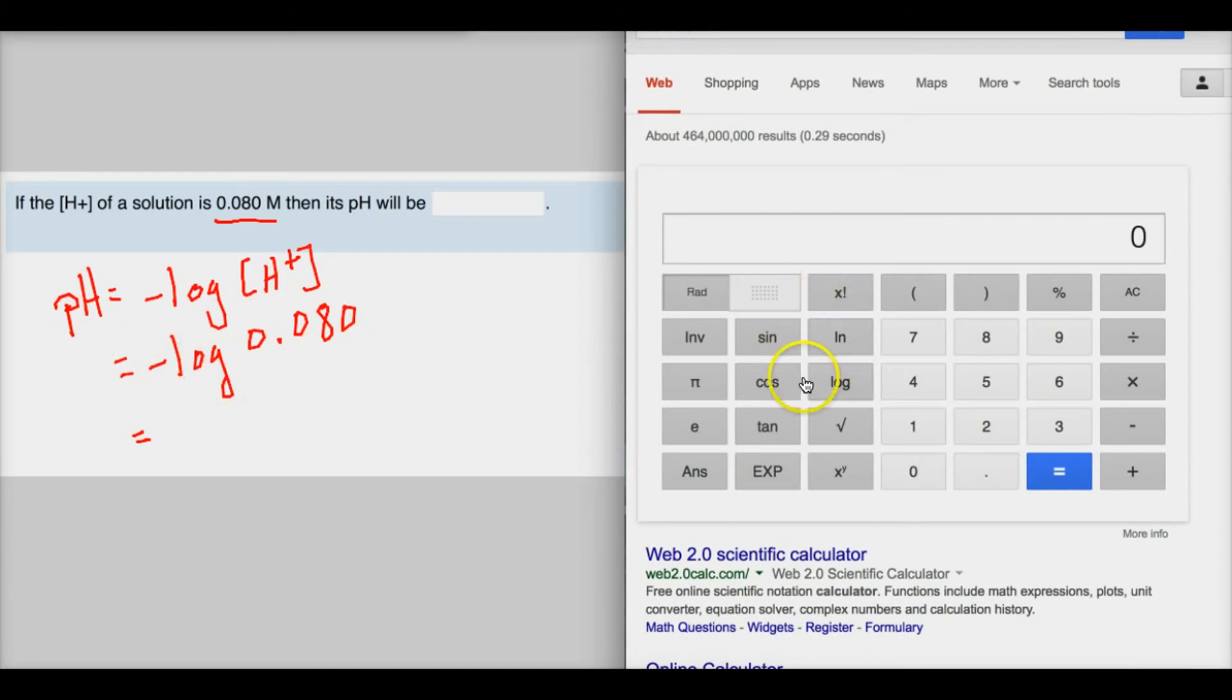So we need to put this into the Google calculator and the way I do that is just hit negative log 0.080 enter or equals and I end up with this answer right here.